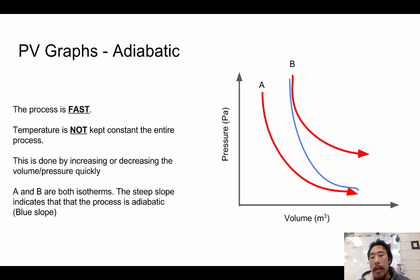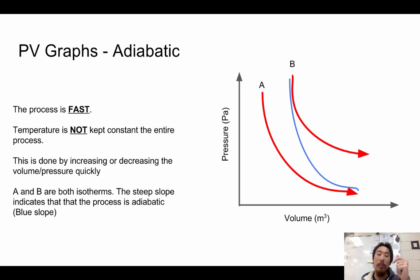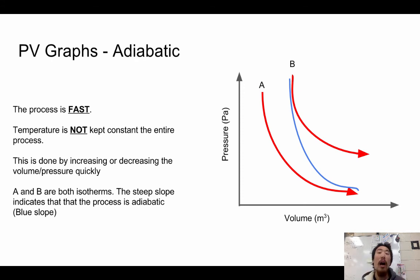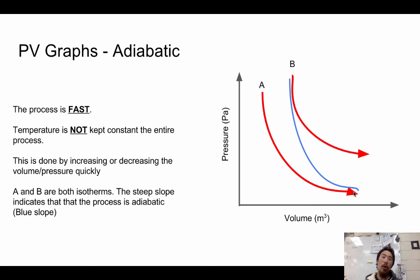Next up is the adiabatic process, which is most easily confused because it looks a lot like an isotherm. The adiabatic process is what the isotherm would look like if the process were not done over a slow, extended, controlled period of time — it happens quickly. To distinguish between the two, you use two isotherms — isotherm A and isotherm B. B has higher energy and higher temperature than A. When the process occurs quickly, it crosses from one isotherm to another, gaining or losing energy.